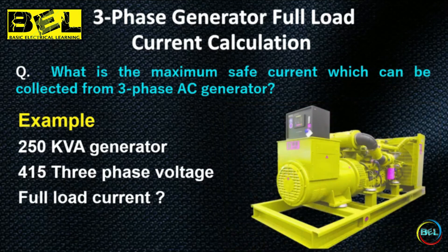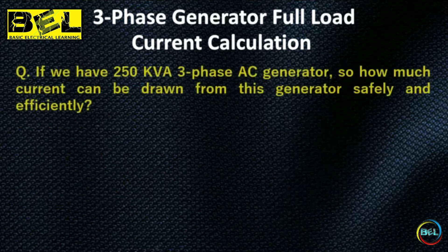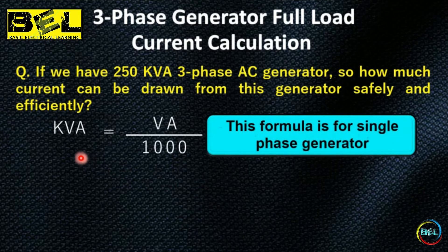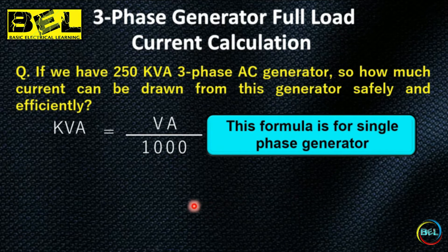Now, let's get to the topic of how we can calculate the maximum current that can be drawn from a three-phase generator. The formula for a single-phase AC generator is: kVA = V × A / 1000. For how to calculate the maximum current for a single-phase AC generator, there is a link in the description.